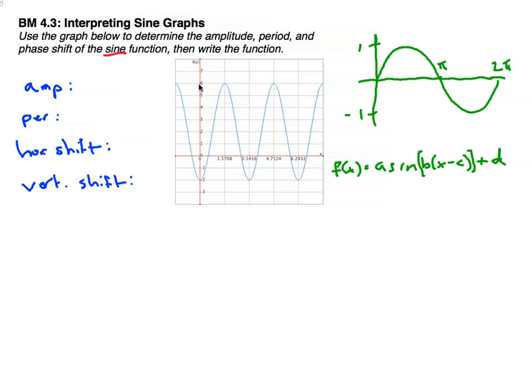If we look at our graph here, it looks like it goes up to 6 and down to negative 2. So, that's a total stretch, or total difference of 8.